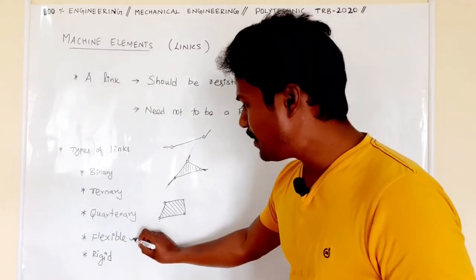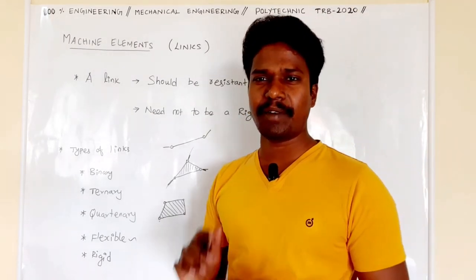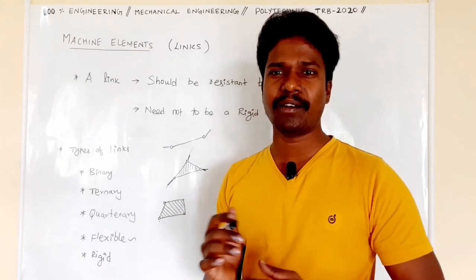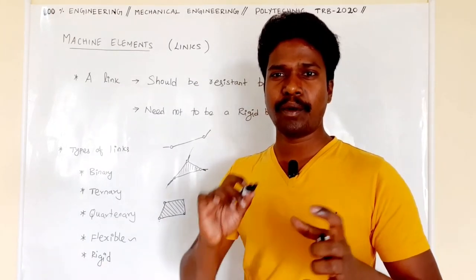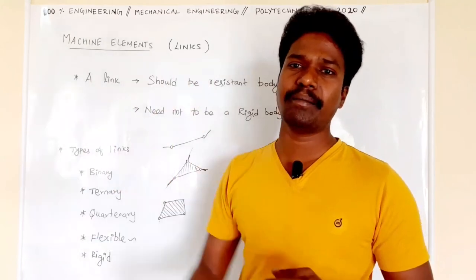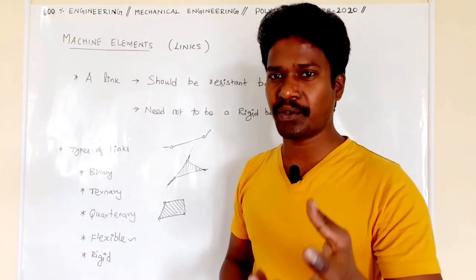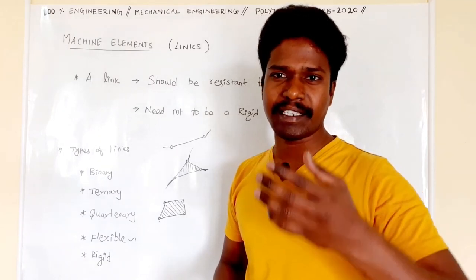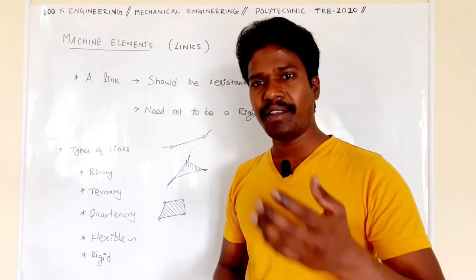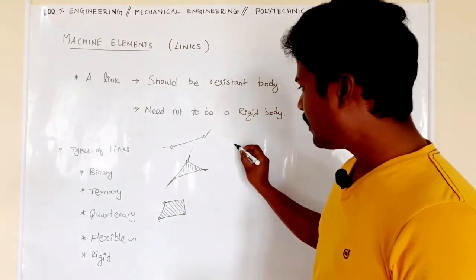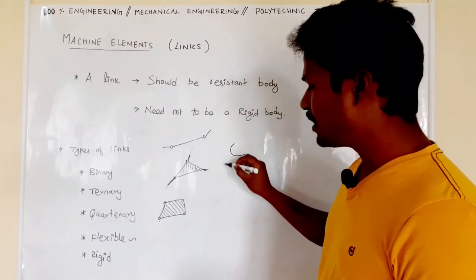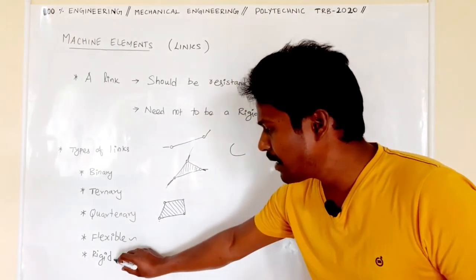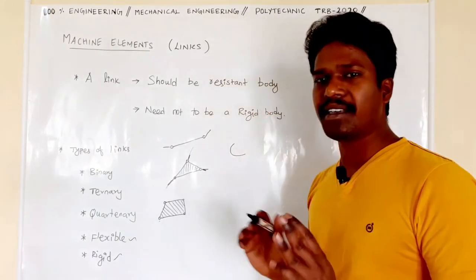Next, flexible link. Flexible link is nothing but that link is flexible. For example, a belt drive is considered a belt which is one link actually, and it is also a resisting body. So it is called a flexible link.